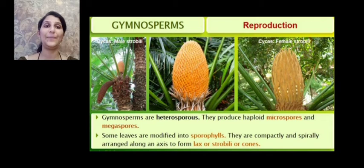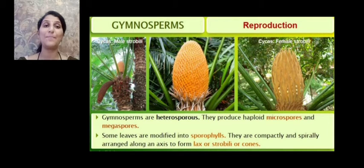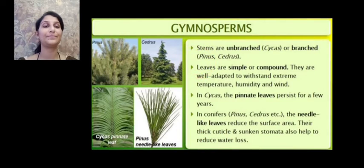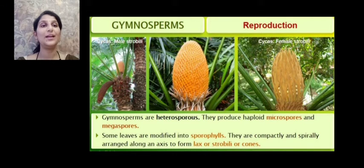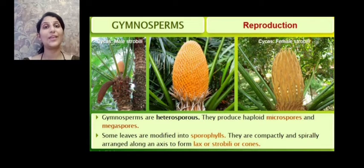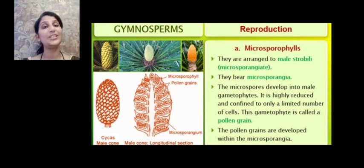When we consider reproduction in gymnosperms, they are heterosporous — meaning they produce two types of spores: microspores and megaspores. These microspores and megaspores are produced on special leaf-like appendages called sporophylls, which are compactly and spirally arranged along an axis to form a strobilus or cone. We can see the male strobilus and the female strobilus, where sporophylls bearing sporangia are arranged spirally around the main axis.